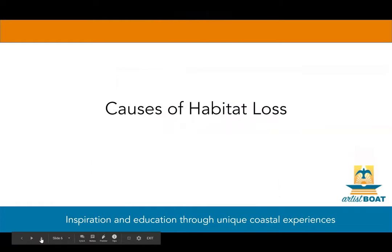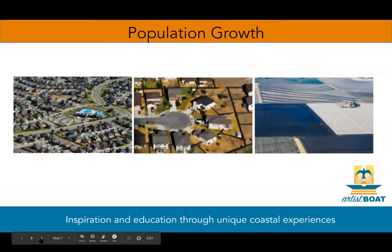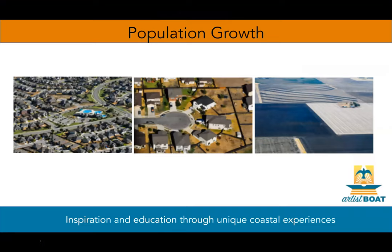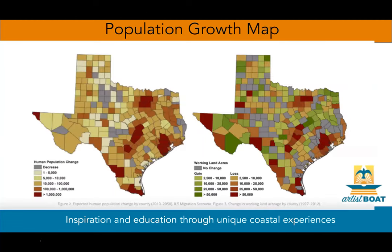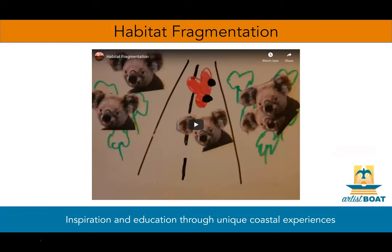Now let's break down some of the different causes of habitat loss. First, we have population growth. As our population grows, more and more land is converted for human needs — more than half of America's wetlands that support waterfowl and wildlife have been drained or plowed. In Texas specifically, we currently have over 25 million residents, with 82% living in urban areas, and the population is predicted to reach 40 million by 2050. The biggest threat within this is the breakup of large land tracts into smaller tracts, referred to as land fragmentation.